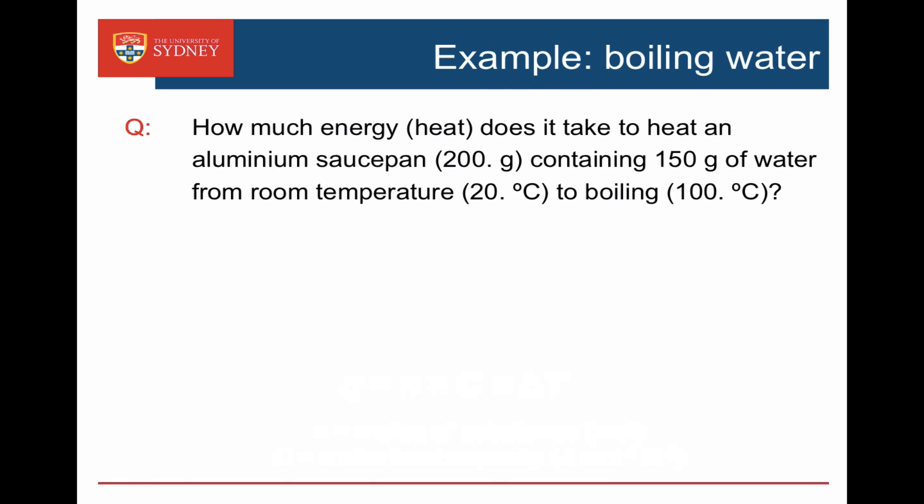Let's heat up an aluminium saucepan of 200 grams containing 150 grams of water from room temperature, 20 degrees C, up to boiling at 100 degrees C. We've been given masses in grams, so we look up the specific heat capacity. For solid aluminium that's 0.9 joules per gram per Kelvin — it takes 0.9 joules to heat 1 gram by 1 Kelvin. The specific heat capacity of water is 4.184 joules per gram per Kelvin, so water requires much more energy to heat by the same amount than aluminium.